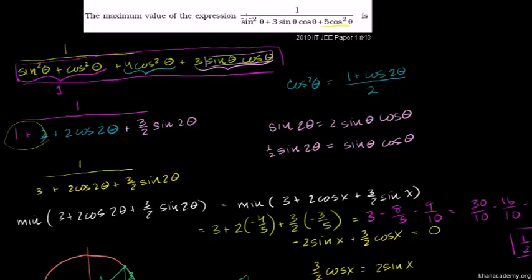Therefore, the maximum value of the expression, which is 1 over the denominator, is 1 over 0.5, which equals 2.